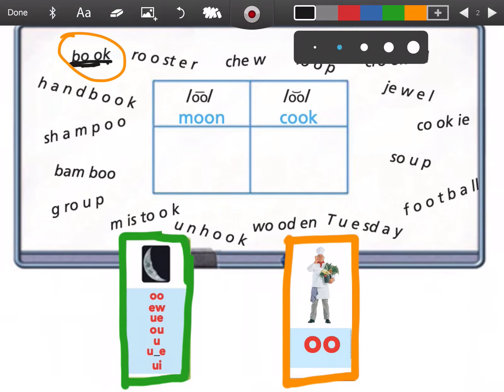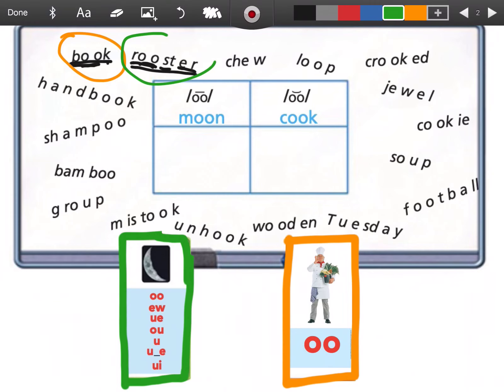Now I'm going to go a little faster. Here we go. Ruh. Ooh. Roo. St. Ruh. Rooster. Rooster. Rooster has ooh. Ch. Ooh. Chew. Chew has ooh, just like the moon card.